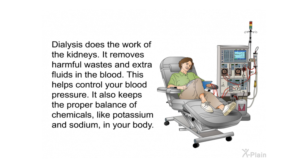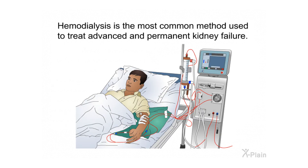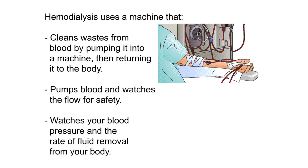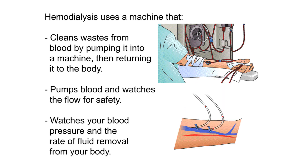Dialysis does the work of the kidneys — it removes harmful wastes and extra fluids from the blood, helping to control blood pressure and keeping the proper balance of chemicals like potassium and sodium in your body. Hemodialysis is the most common method used to treat advanced and permanent kidney failure. It uses a machine that cleans wastes from blood by pumping it through a filter and then returning it to the body.